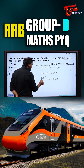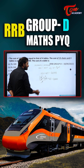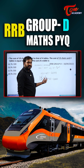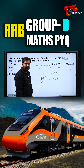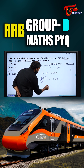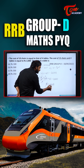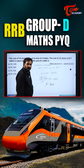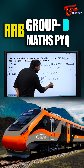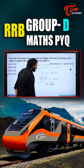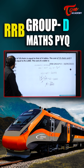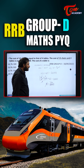Now simplifying: (4/10) times 15 gives 6, so we get 6T plus 2T, which equals 8T. So 8T is equal to 2000. Dividing both sides by 8 gives T equals 250. The price of each table is 250 rupees.